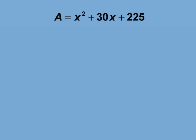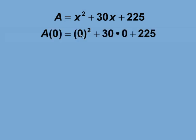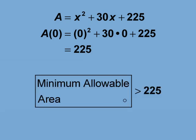The minimum allowable area is when x is equal to zero, which results in an area of 225. This means that the minimum allowable area is 225 and the allowed x values are greater than zero.